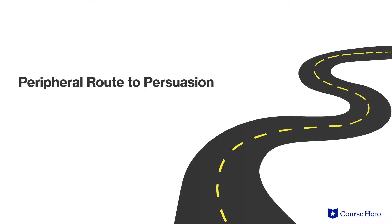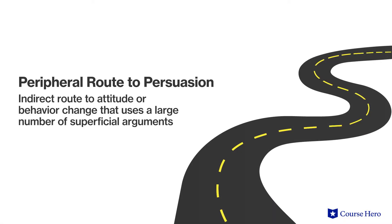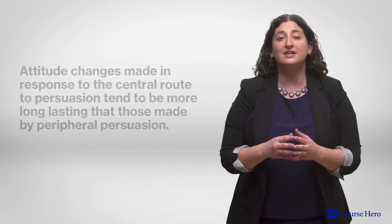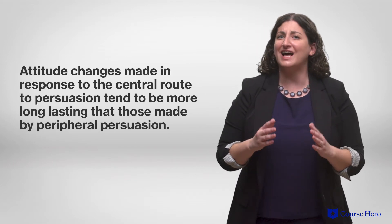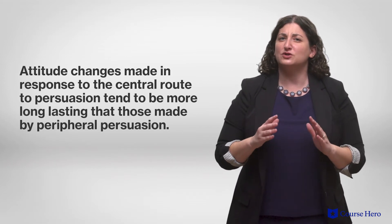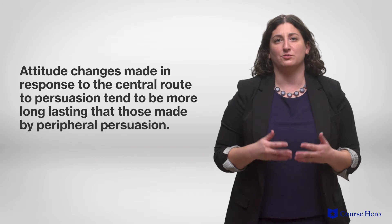The peripheral route of persuasion is an indirect route to attitude or behavior change that uses a large number of superficial arguments. It's an effective approach when the target of persuasion is not likely to put deep thought into decision making. The attitude changes in response to the central route tend to be more long-lasting than those caused by peripheral persuasion.